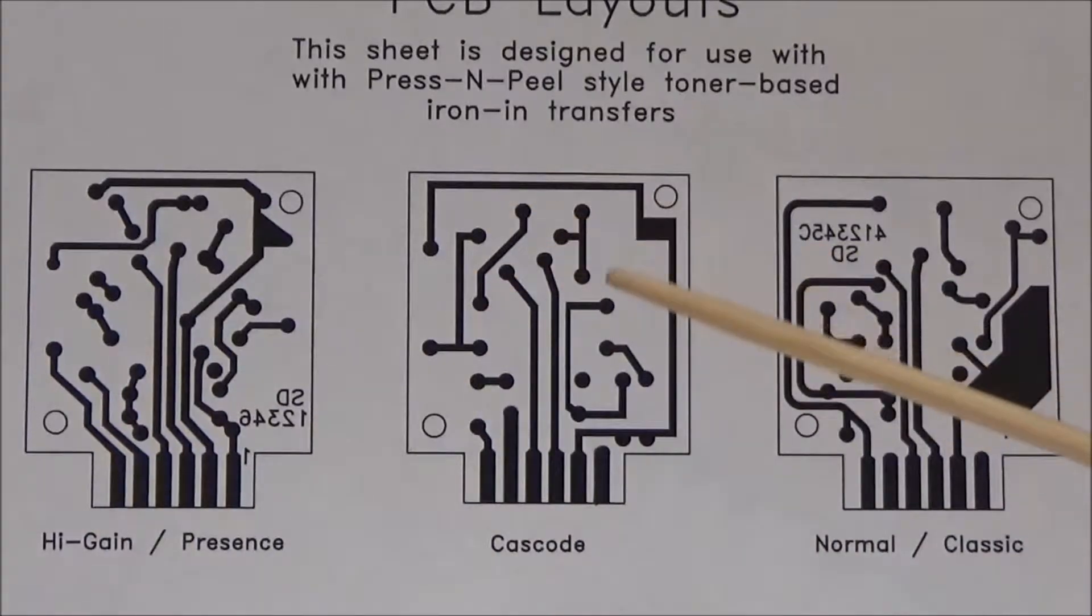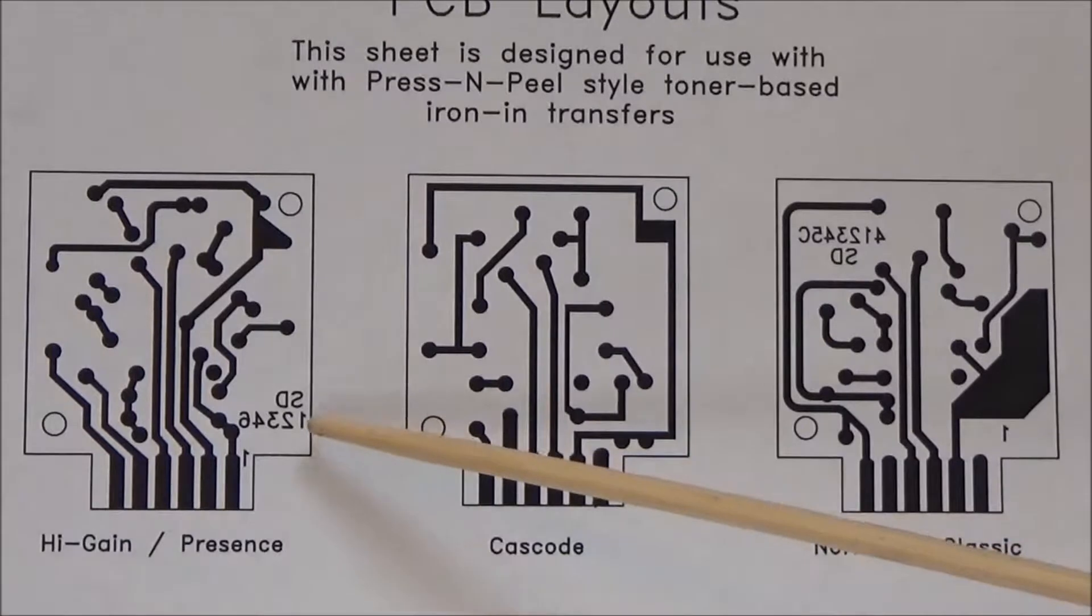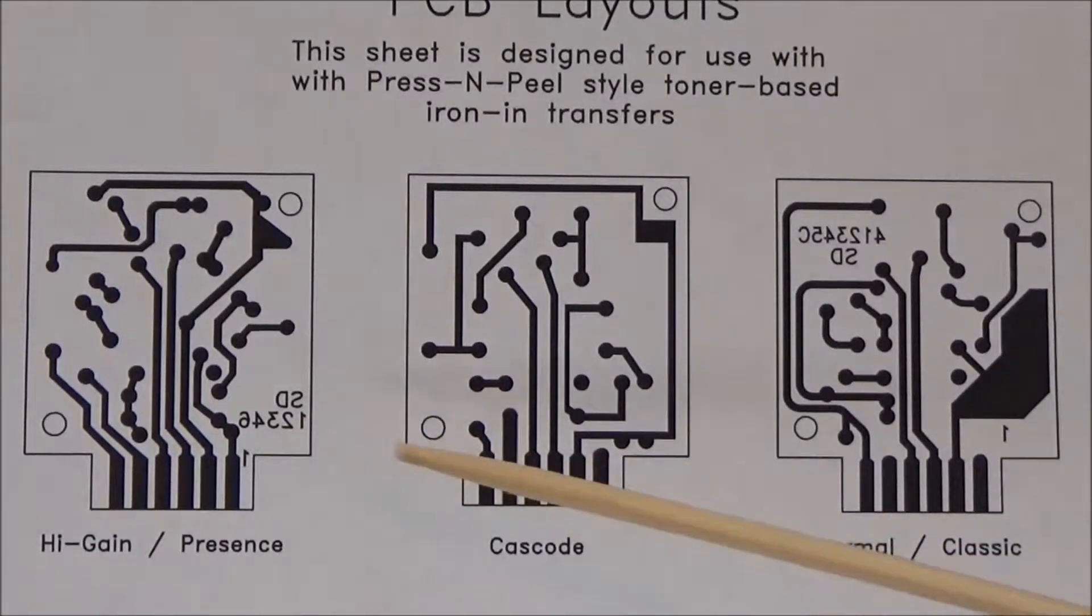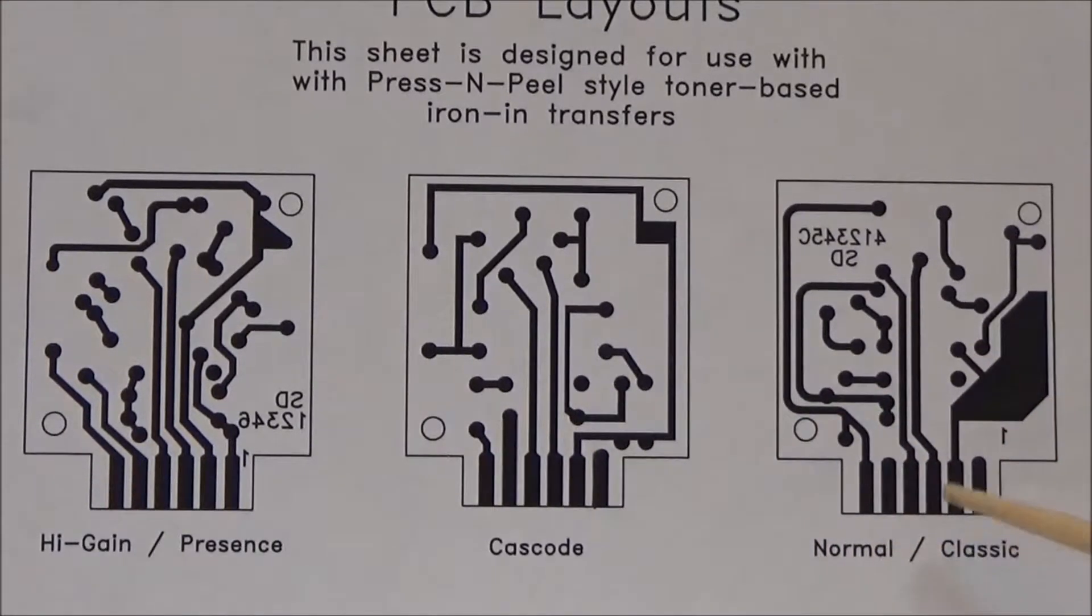You can see here the high gain and presence modules both use this SD12346 design. The cascode had its own design. The normal and classic modules, and the low-cut normal and low-cut classic modules, all use this same PCB, the SD412345C.